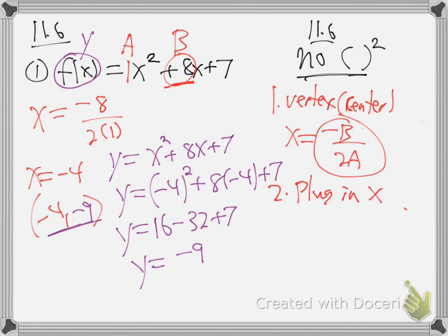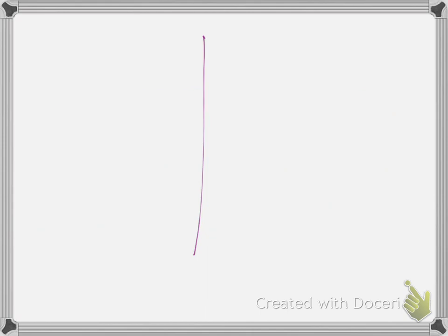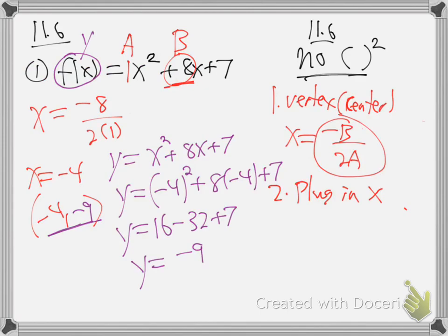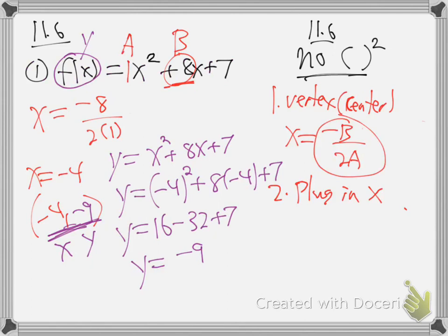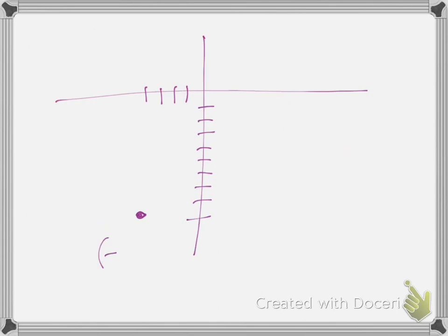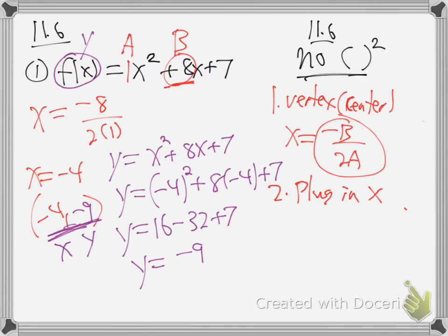So at this point you're going to do the same thing you always do - let's go find that center. I'll go to a fresh screen and do a big graph. What's the center? Minus 4, minus 9 - that's x, y. So that means go back 4: 1, 2, 3, 4 - down 9: 1, 2, 3, 4, 5, 6, 7, 8, 9. Right there.